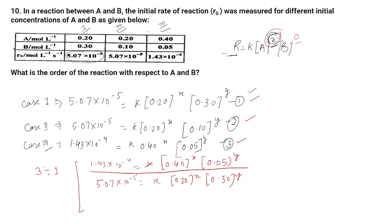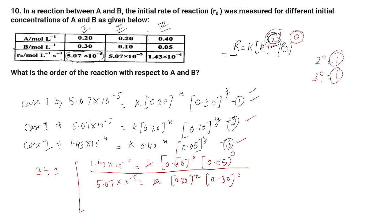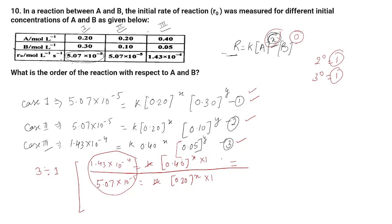Now k cancels, and since y = 0, any concentration raised to power 0 equals 1, so the [B]^y terms both equal 1 and drop out. Simplifying the left side gives approximately 2.82, and on the right side we get (0.40/0.20)^x = 2^x. So we have 2.82 = 2^x.